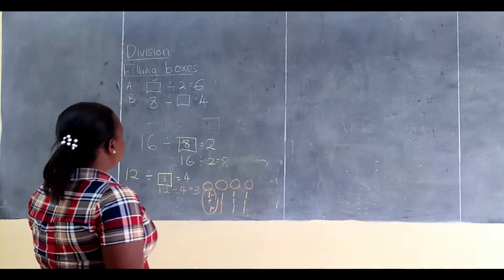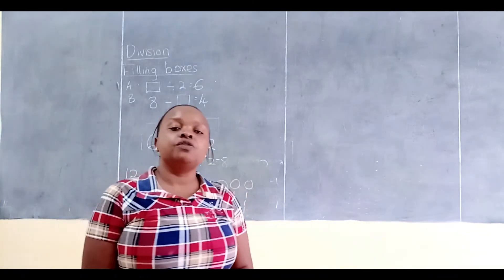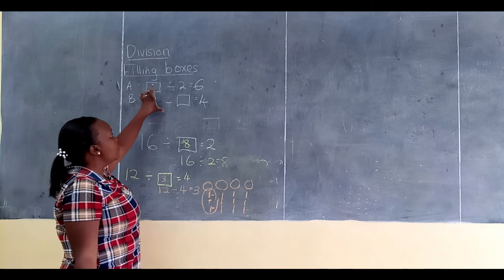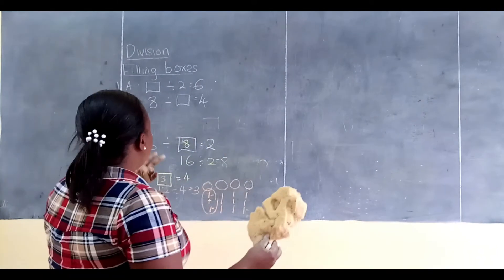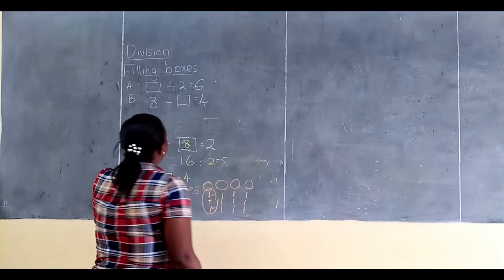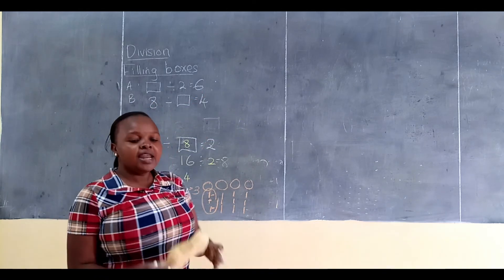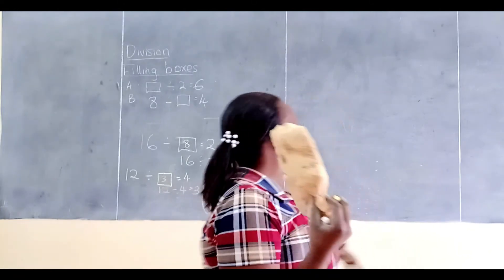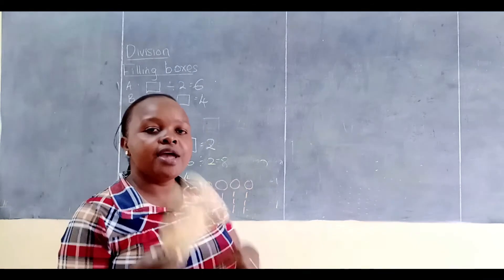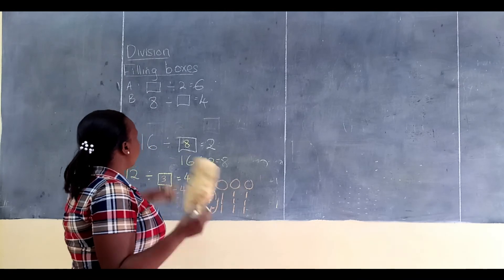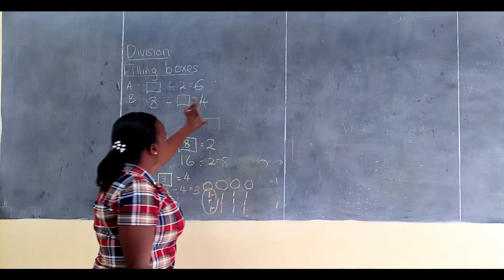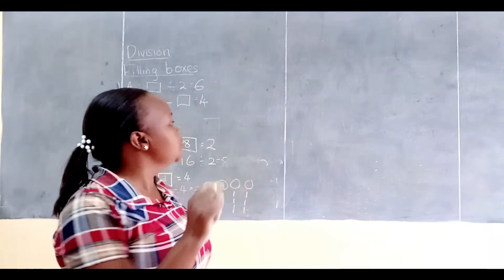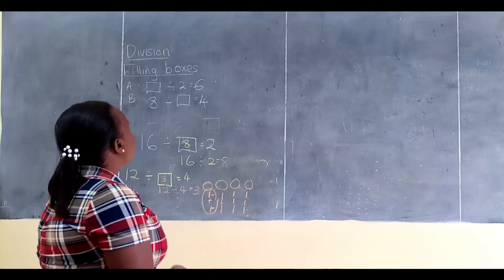I want to teach you a short song on how you can be guided when you get that kind of sum. In division, you sing: 'When I see a box followed by division, I will multiply, I will multiply. When I see a number followed by a box, I will divide, I will divide.' Keep singing that song before your parents, and you will never get any question about filling boxes in division wrong.